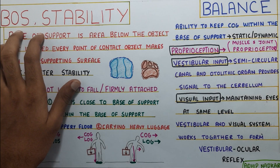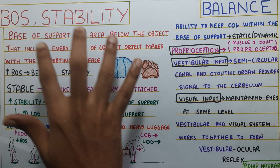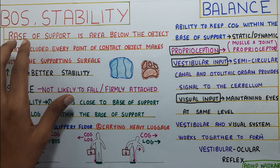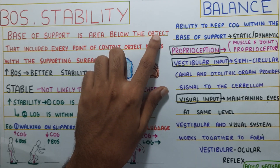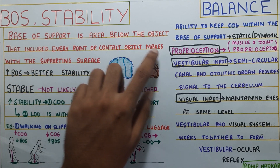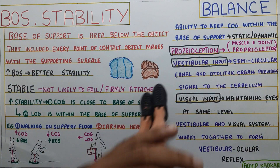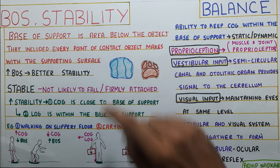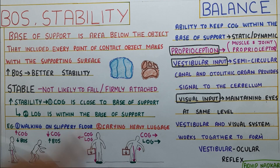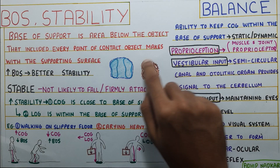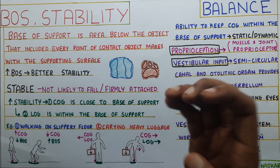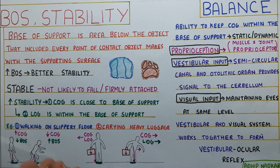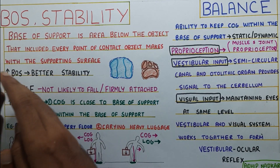In this video we are going to talk about the base of support and stability, and we will also see the difference between stability and balance. Starting with the base of support — it is the area below the object that includes every point of contact the object makes with the supporting surface. When Joe is standing, he makes contact with the ground, and the area between his footsteps is also considered the base of support. Similarly, the area between a cat's paws or a table's four corners forms a rectangular base of support. As this base of support increases, it gives better stability.